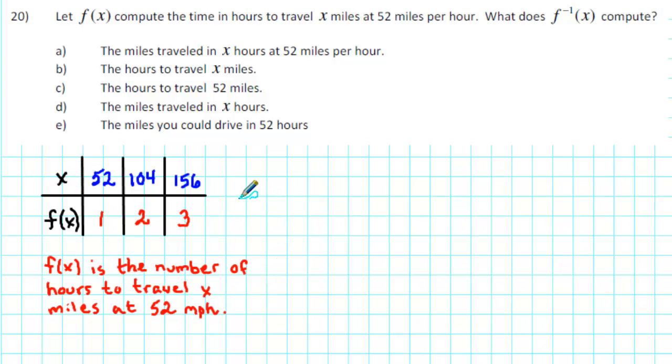We can use the table for f to create a table for f inverse. The inverse function reverses the process of the original function, so the outputs of f of x become the inputs of f inverse. So the inputs will be 1, 2, and 3 hours.